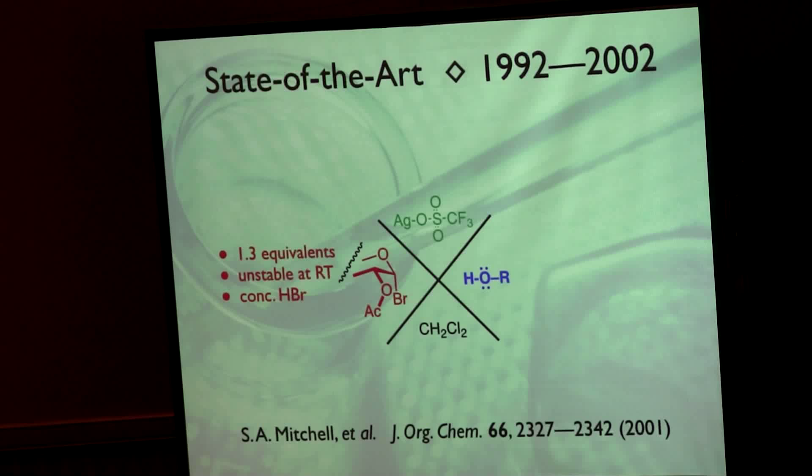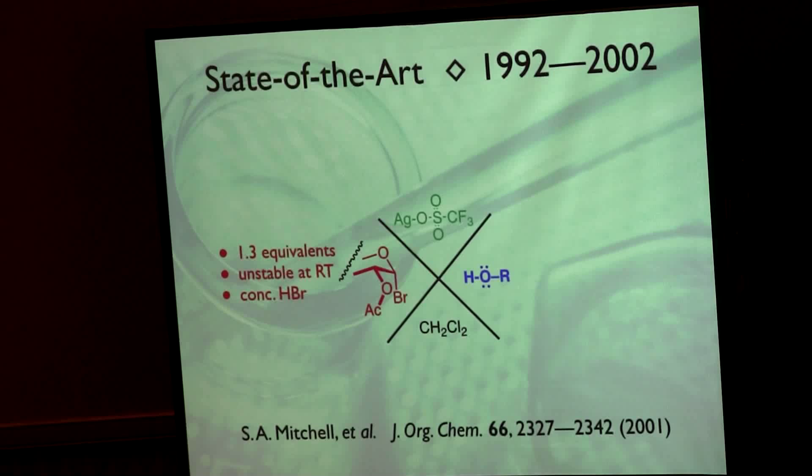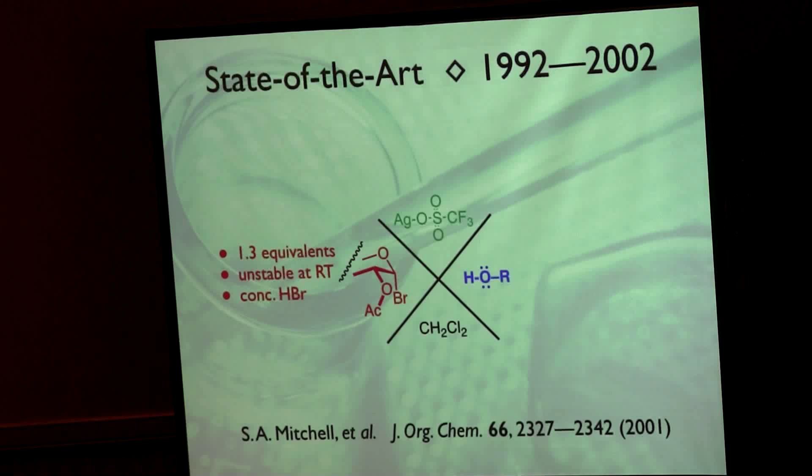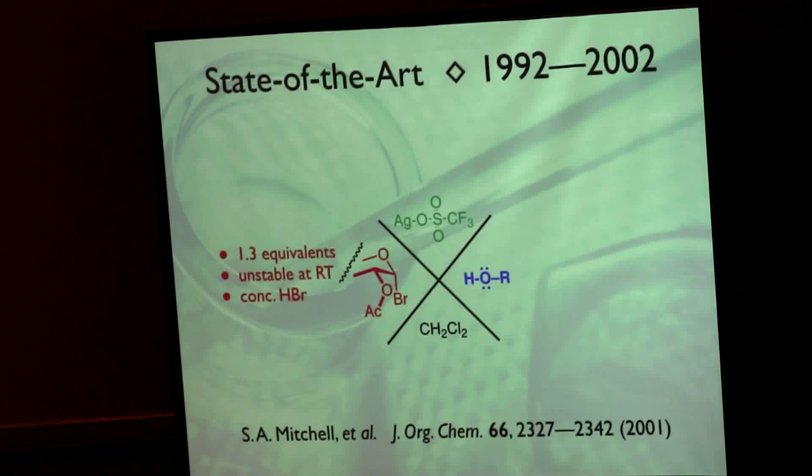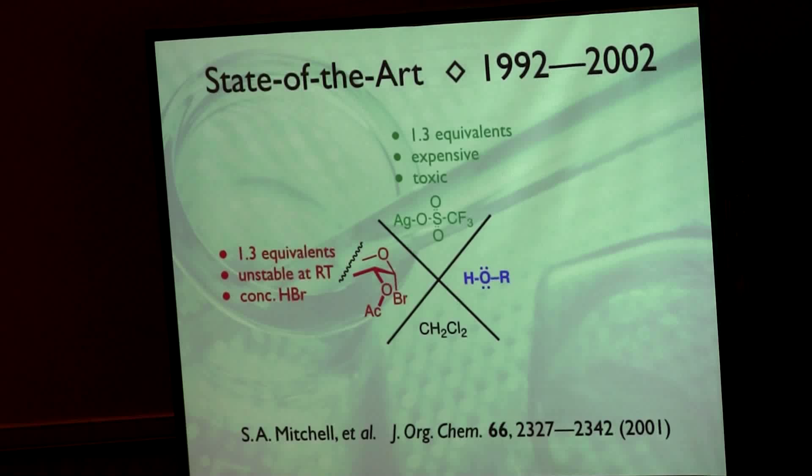And there are others of course, but the point is you have to make a fairly reactive glycosyl donor, something that's unstable. Of course, the more reactive it is, the less stable it is. And us chemists, we're really kind of schizophrenic, right? We want everything to be stable at room temperature and put in a bottle, but then we want it to react at minus 78 in 10 seconds, which of course are impossible to get both of those.